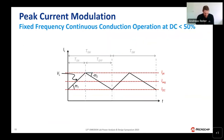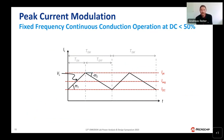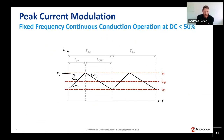There's one specific problem with peak current mode control: subharmonic oscillations, which only exist in fixed-frequency continuous conduction mode. The root cause is a geometry problem. With a nice symmetrical triangular current waveform in the inductor, we have an on-time charging phase and a discharge phase.